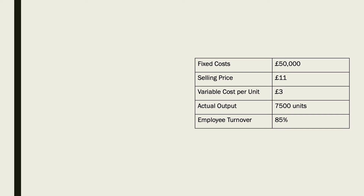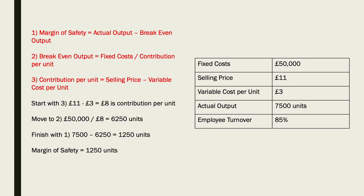To calculate margin of safety, you need three formulas. Margin of safety equals actual output minus break-even output. Of course, you're given the actual output, but you're not given the break-even output, so you need to calculate that. To calculate that, you need another formula: fixed costs divided by contribution per unit. Now, contribution per unit isn't given either, so you need to calculate that too. Formula three is contribution per unit equals selling price minus variable cost per unit. We need to work on formula three and move our way up to calculate the margin of safety.